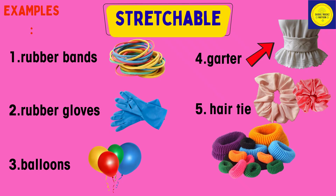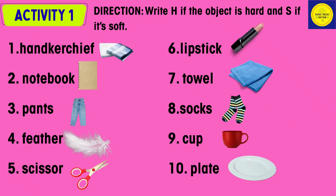Balloons, garter, hair tie. Activity 1: Write H if the object is hard and S if it's soft. Items: handkerchief, notebook, pants, feather, scissors.